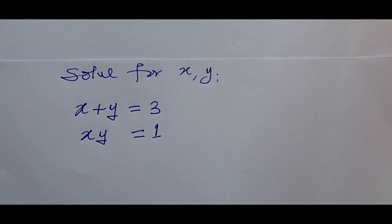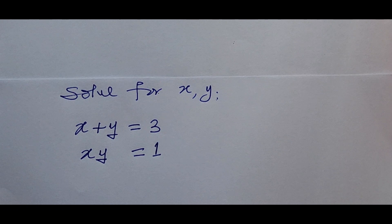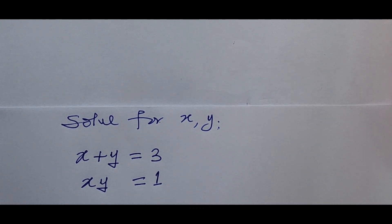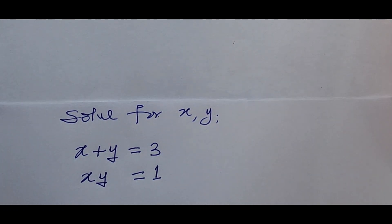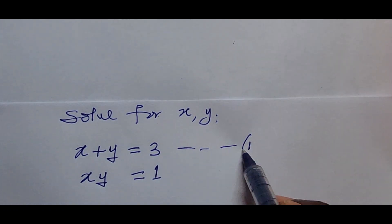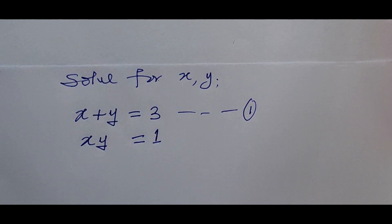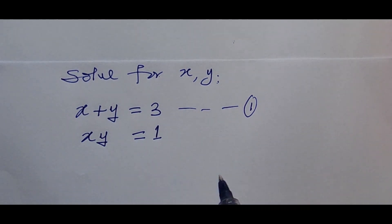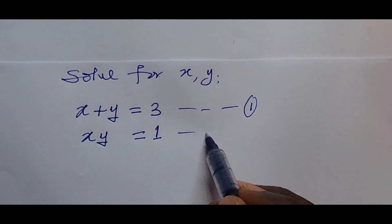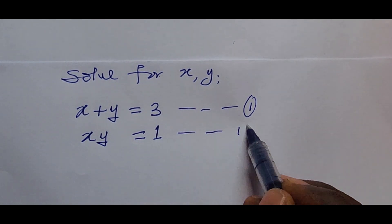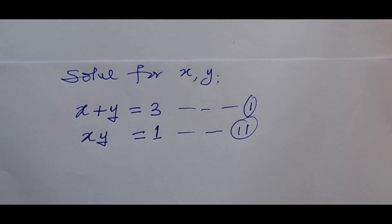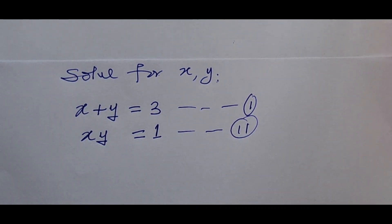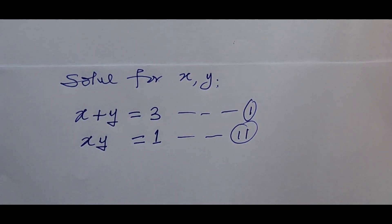The question is: solve for x and y. The first equation is x plus y equals three — we're taking this as equation one — and the second one is x times y equals one. This is the second equation. So how do we solve for x and y in this challenge?